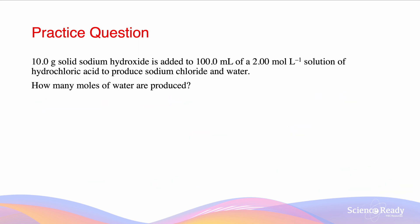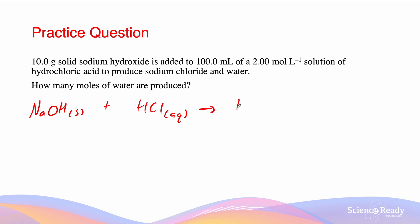This limiting reagent question involves working with concentration. 10 grams of solid sodium hydroxide is added to 100 millilitres of a 2 mole per litre solution of hydrochloric acid to produce sodium chloride and water. How many moles of water are produced? We begin by writing out our equation: sodium hydroxide solid reacted with hydrochloric acid produces water and salt. The equation is already balanced with a stoichiometric ratio of 1:1:1:1.